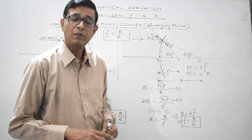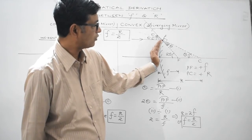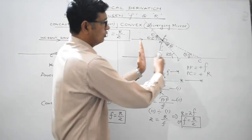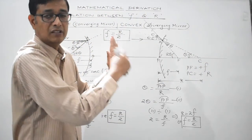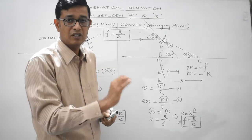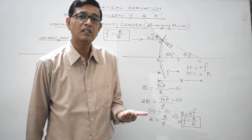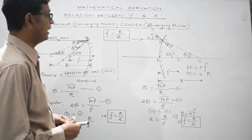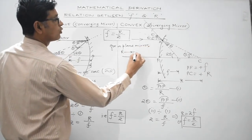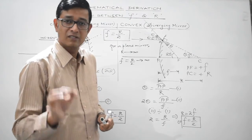This formula is applicable for a plane mirror as well. For a plane mirror, imagine the curvature keeps decreasing and eventually the surface becomes flat. So the radius keeps increasing, and for a plane mirror the radius of curvature approaches infinity. Since F = R/2, the focal length will also approach infinity. Therefore, the focal length of a plane mirror is infinite.